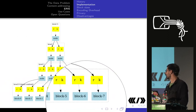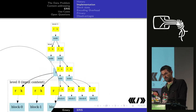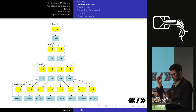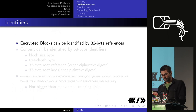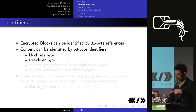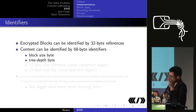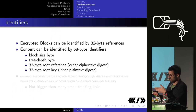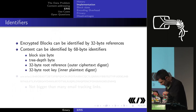At the bottom you have the data blocks, each with a reference and key. That forms one level of the tree, and you keep iteratively reducing until you have one node at the top. When blocks are in encrypted form, you only need a 32-byte reference — the hash of the encrypted block. To access the data you use a 68-byte identifier: one byte for block size, one byte for tree depth, then a root reference (the hash of the encrypted root block you can request from storage), and finally the key to decrypt and verify the root block's contents.